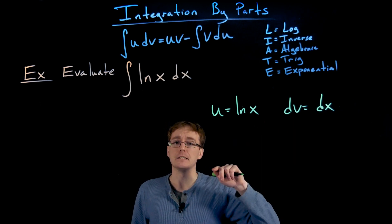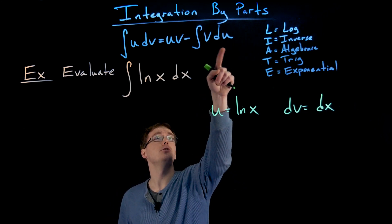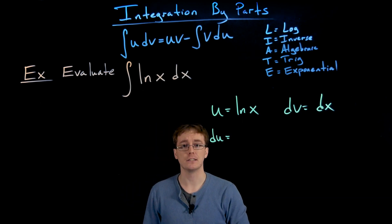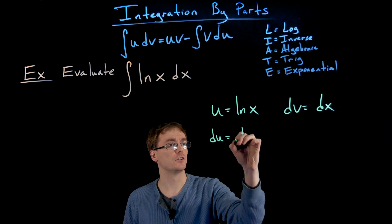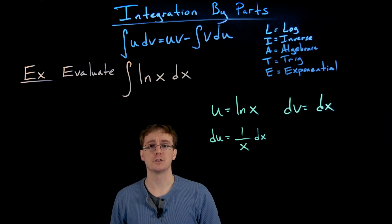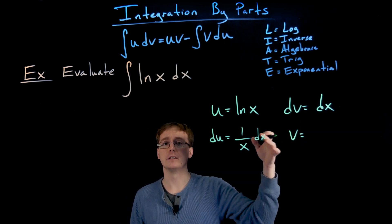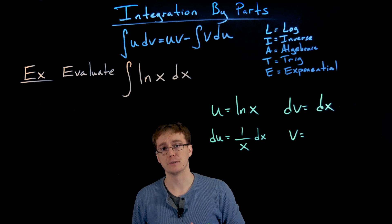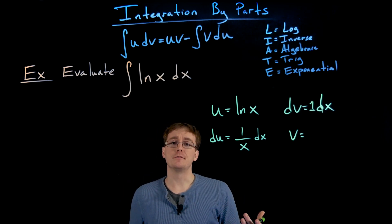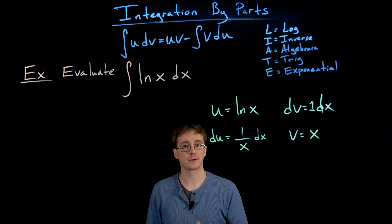Now that we have u and dv, we find the remaining two pieces: du and v. Taking the derivative of the natural log of x gives us 1 over x, so du equals 1 over x times dx. To go from dv to v we integrate — the antiderivative of 1 dx is just x. So now we have all four pieces for our integration by parts formula.